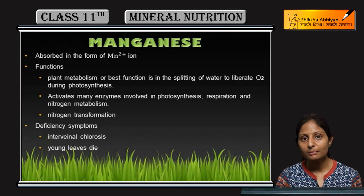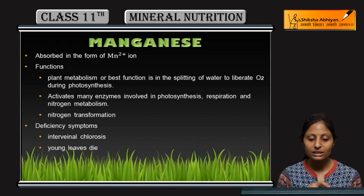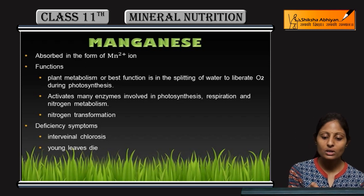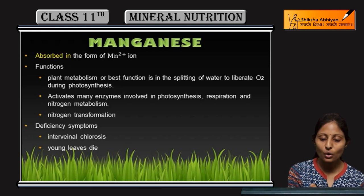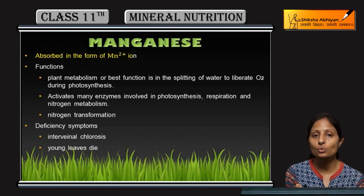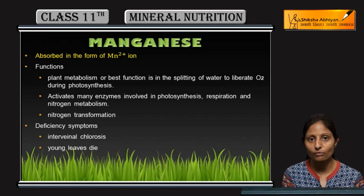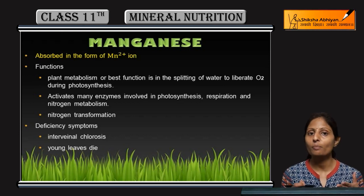The next micro element is manganese. Manganese kya hai, wo kis form mein absorb hota hai? It is absorbed in the form of Mn²⁺ iron — manganese plus 2 iron ki form mein wo absorb hota hai.